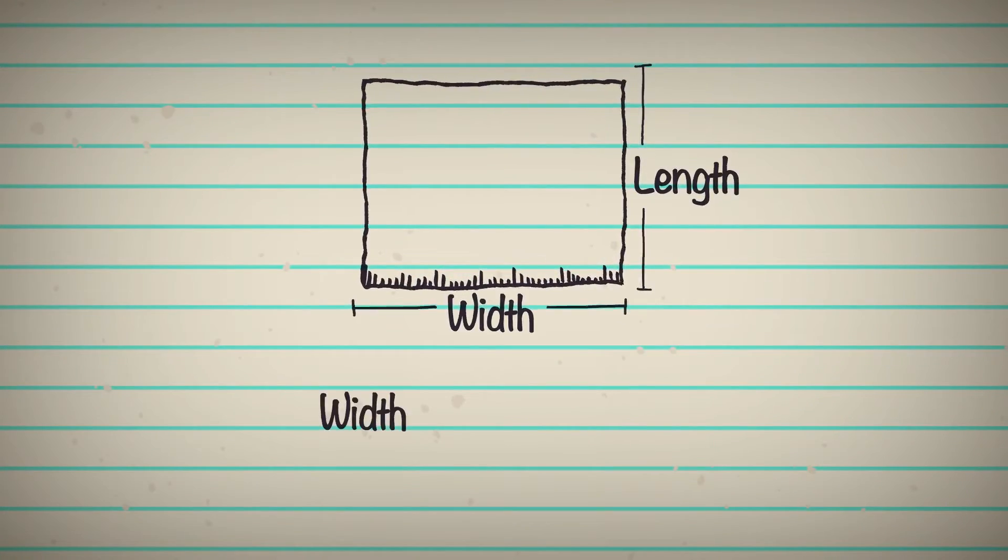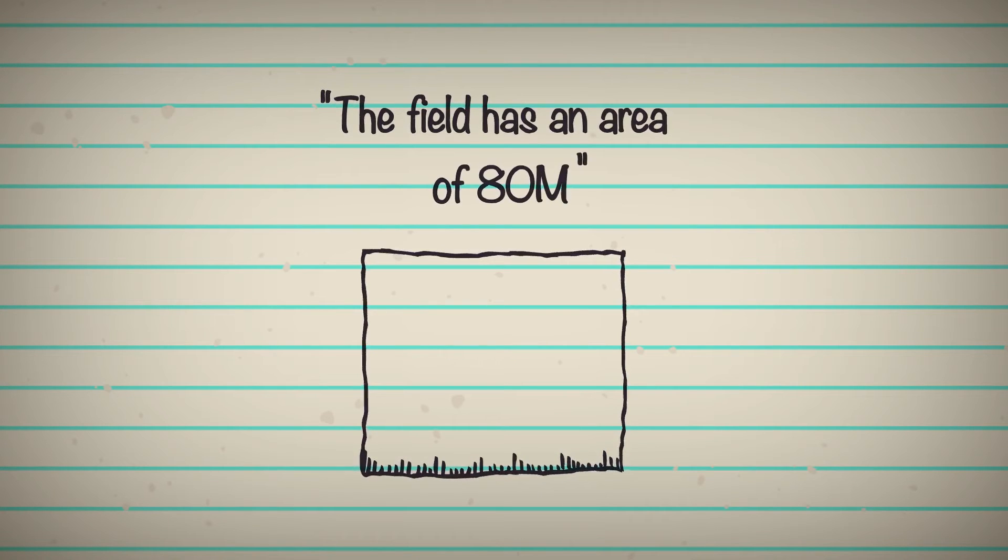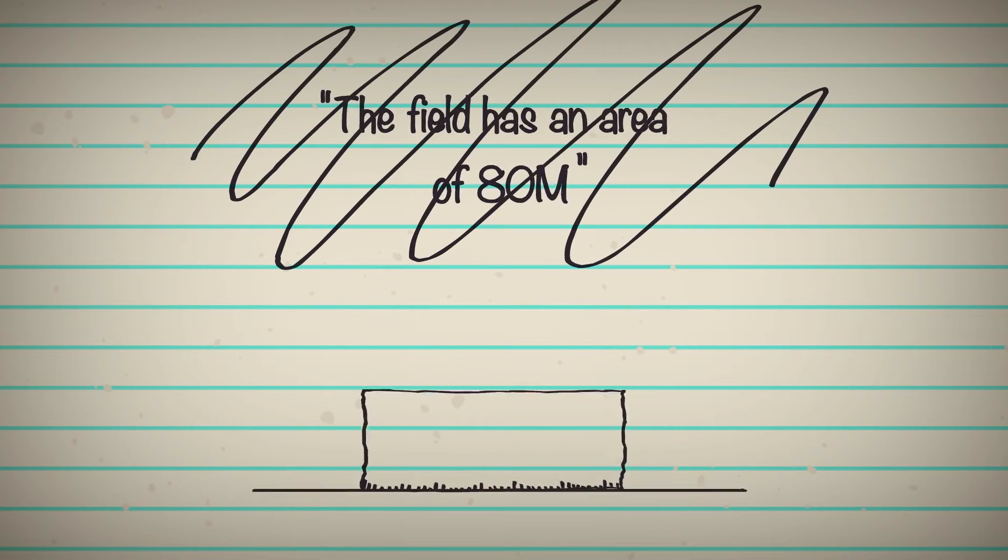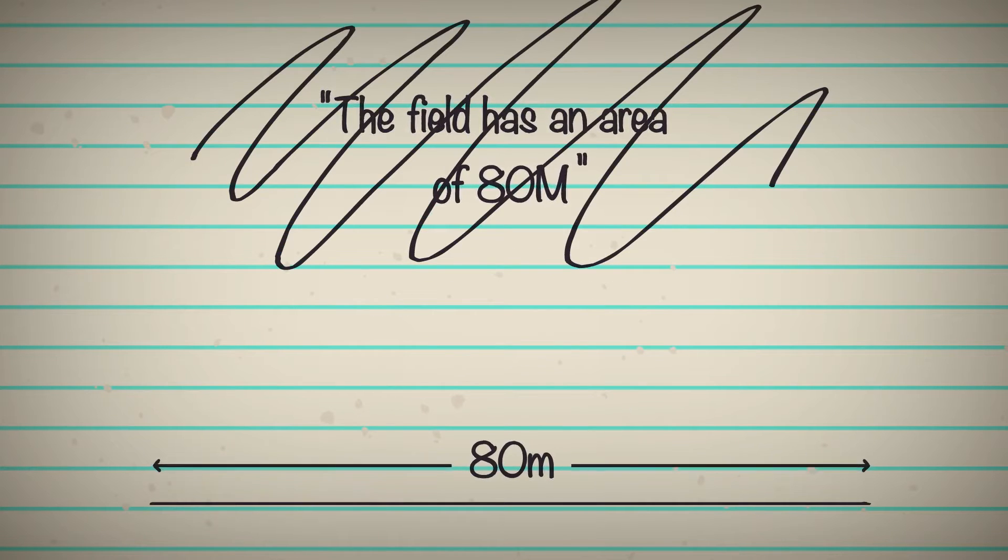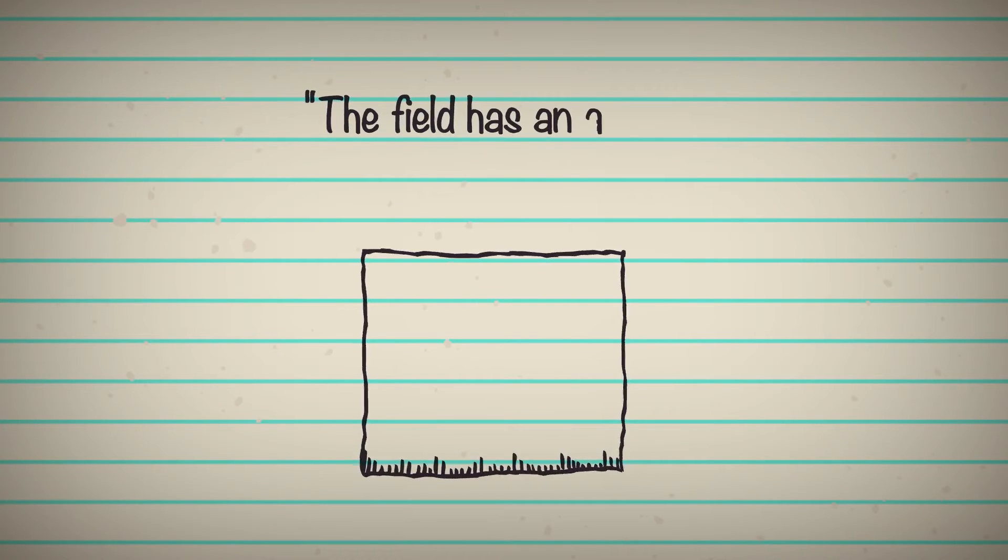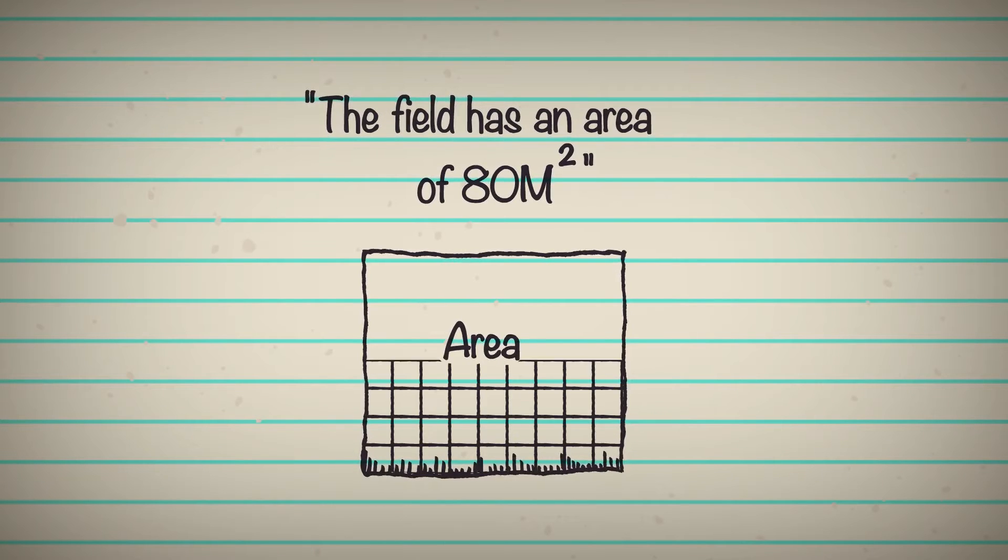By multiplying the width and length, we get the area, which represents the two-dimensional space the field occupies. If we say the field has an area of 80 meters, our statement is false, since 80 meters is a measure of length, which is one-dimensional. So, instead, we say the field has an area of 80 meters squared. Since we must use square units for measurement in the second dimension.